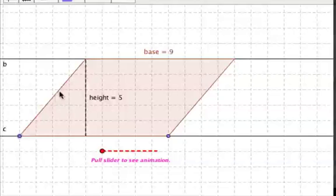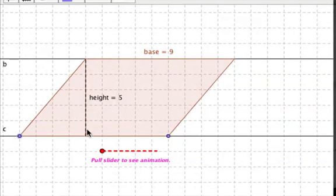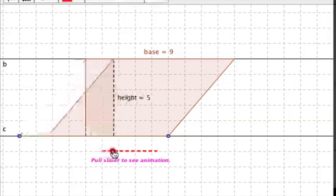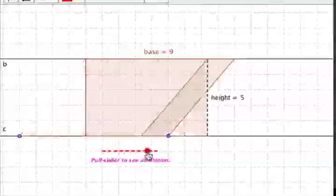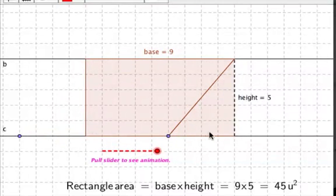The tricky thing is the height is not the slanted side. The height is the up and down. So the height is five, the base is nine. So nine times five is forty-five, which happens to be the exact same area as the related rectangle.